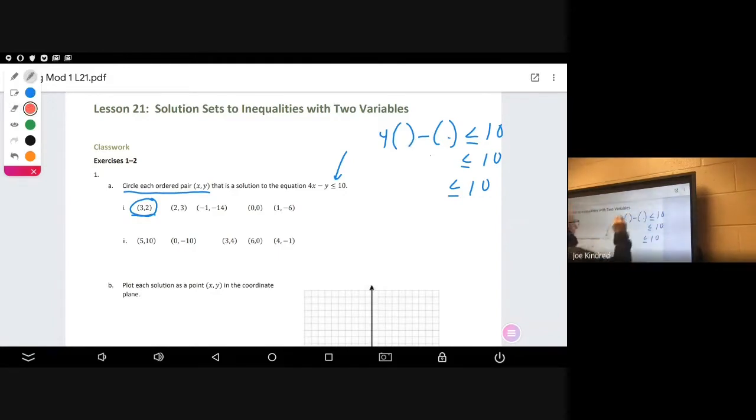Now we're going to plug in 2 and 3. That's 8 minus 3, which is 5. Is that less than or equal to 10? Yes. And negative 1, negative 14. We get negative 4 minus minus turns to plus 14, and this becomes, if my arithmetic is correct, 10. Is that less than or equal to 10? Yes.